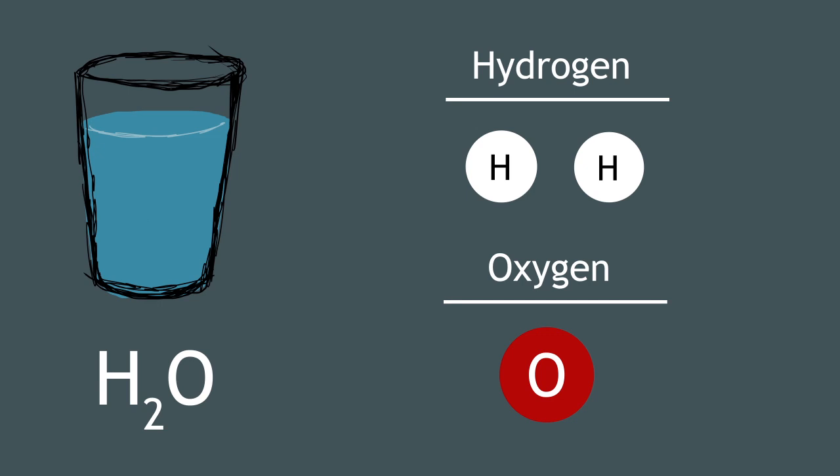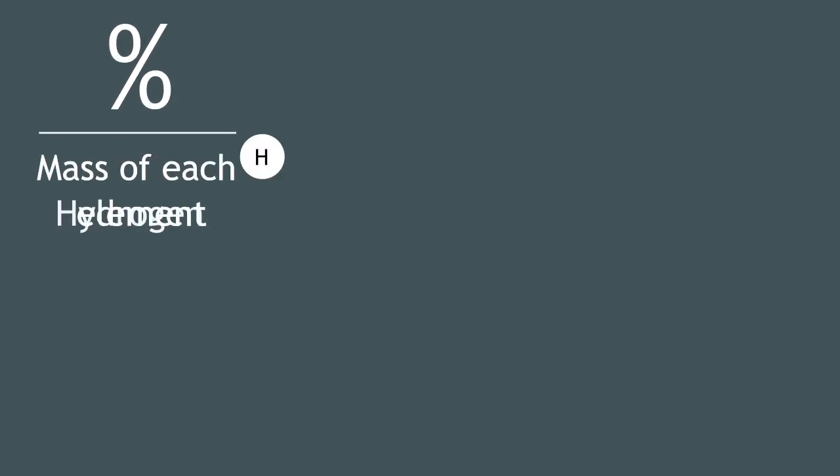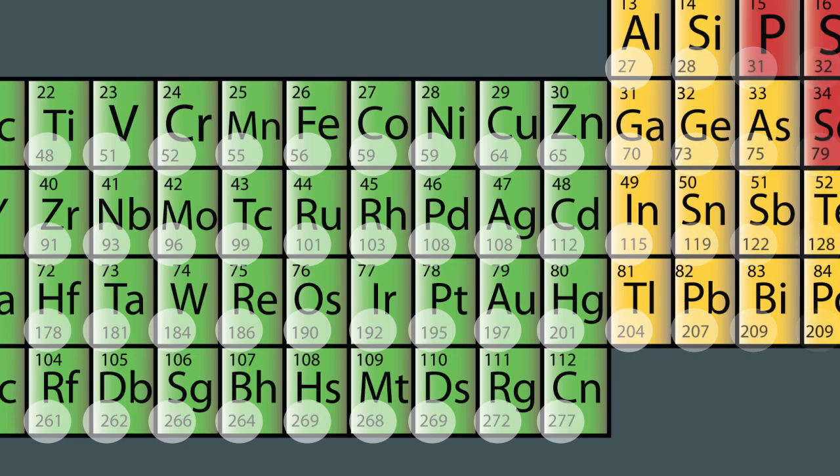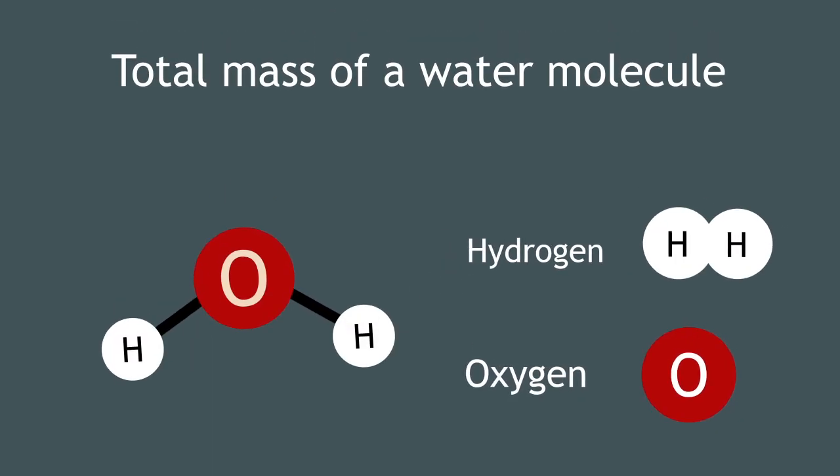But have you ever considered the percentage by mass of each element, hydrogen and oxygen, in a molecule of water? To do this we need to know the atomic mass of each element so you can calculate the total mass of a water molecule.